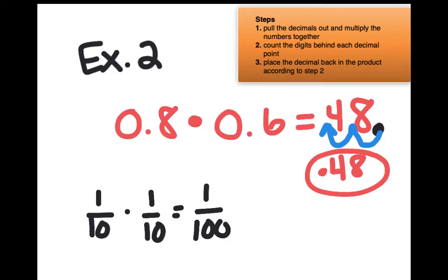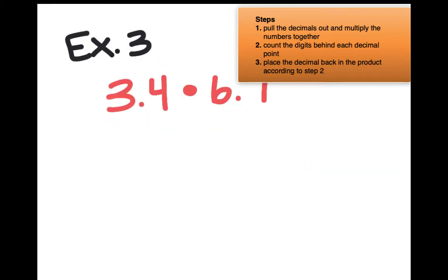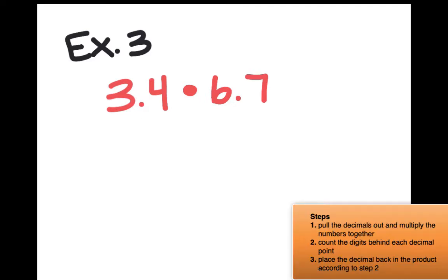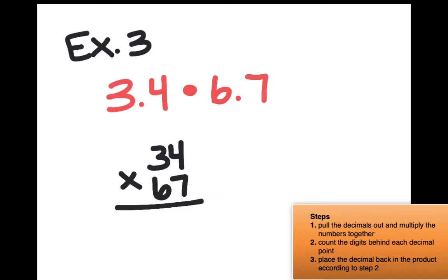Let's go ahead and look at example 3. Pull the decimals out and multiply the numbers together — let's do that right now in our notes. We're going to pull those decimals out and multiply the numbers like they're whole numbers. If I pull this decimal out, the number would look like 34. If I pull this decimal out, the number would look like 67. We haven't finished step 1 — it says multiply the numbers together. So go ahead and multiply the numbers together.